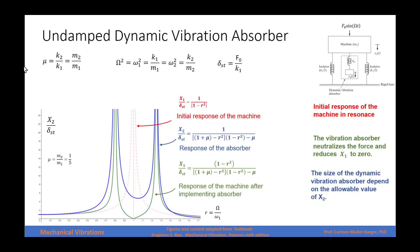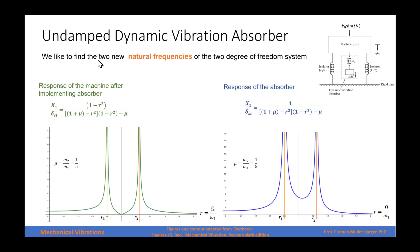Finally, we can graph all the responses together. Initially the system is at resonance at r = 1. After adding the absorber, the response of the machine equals zero at r = 1, and the response of the absorber has a specific magnitude that we can calculate. We were able to calculate both the response of the machine and the response of the absorber, and in both cases we have two new natural frequencies where the system will experience resonance.